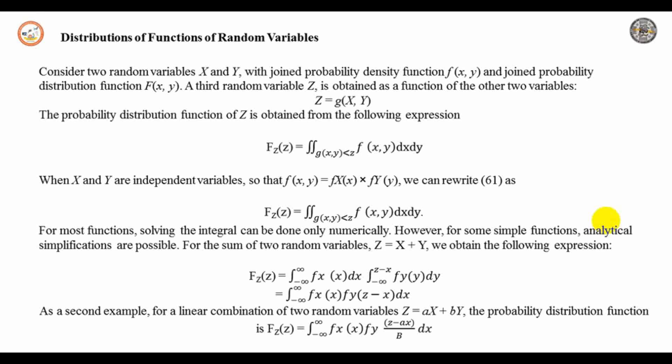As a second example, for a linear combination of two random variables Z = AX + BY, the distribution function is given by F_Z(z) = ∫_{-∞}^{∞} f_X(x)·F_Y((z - Ax)/B) dx. All these equations you need to memorize and reproduce.